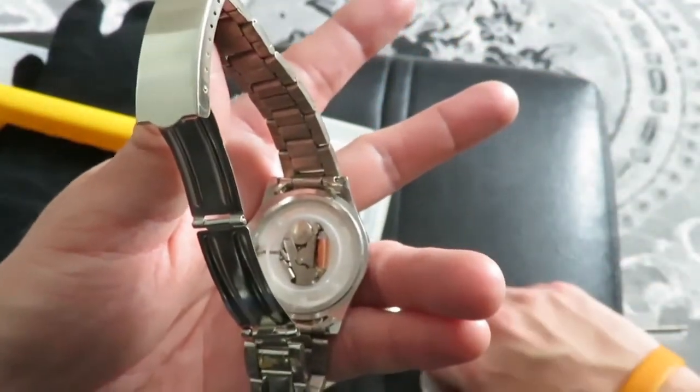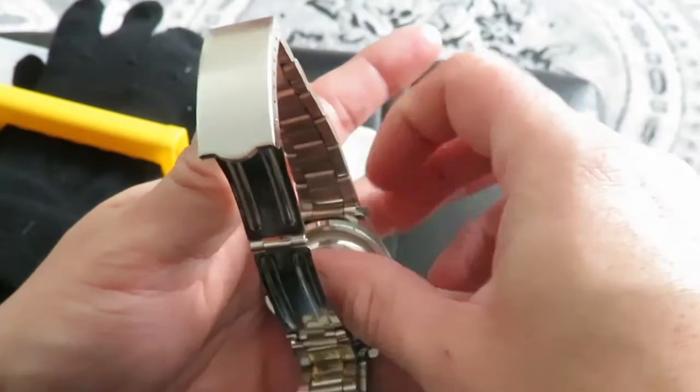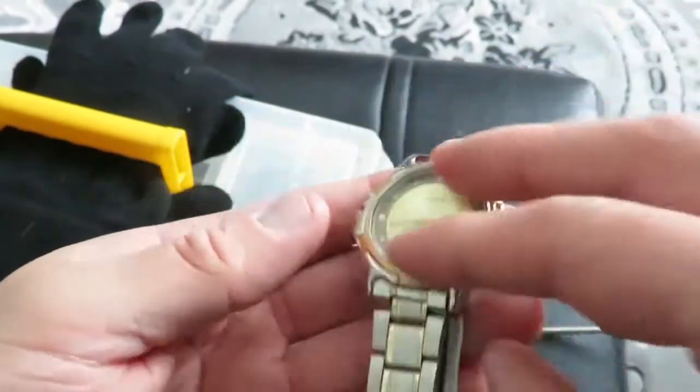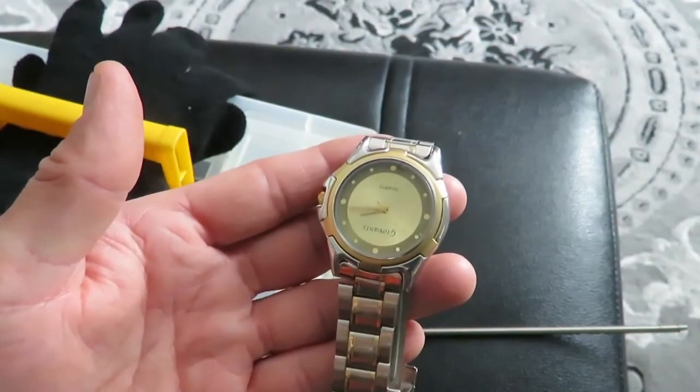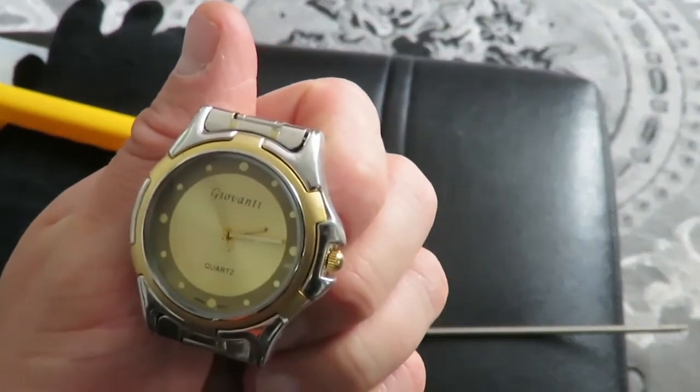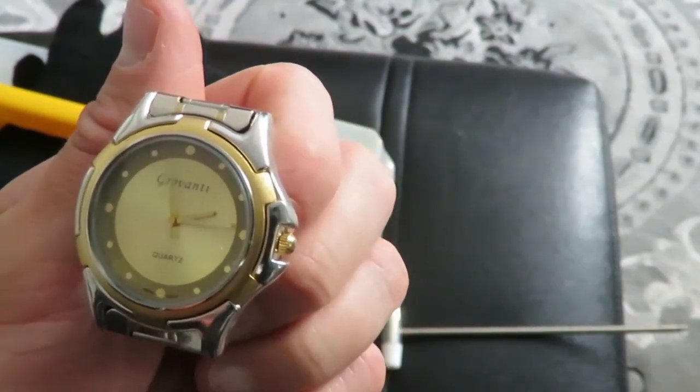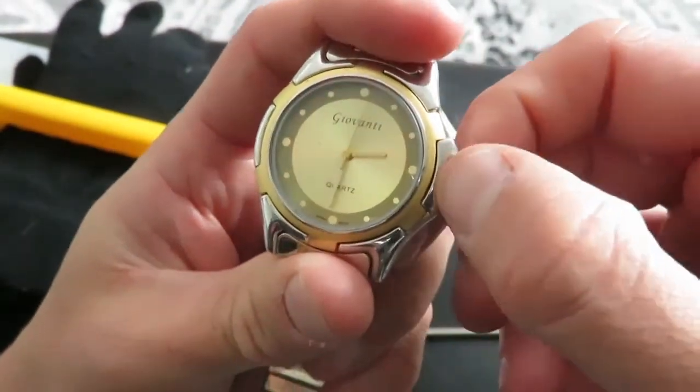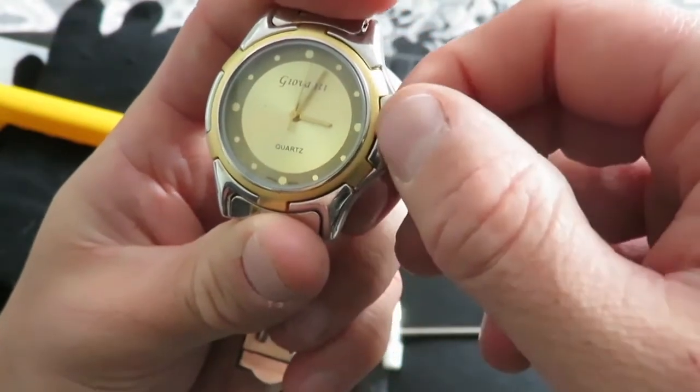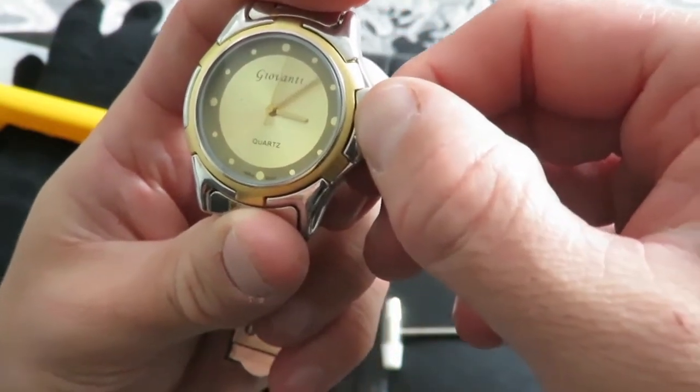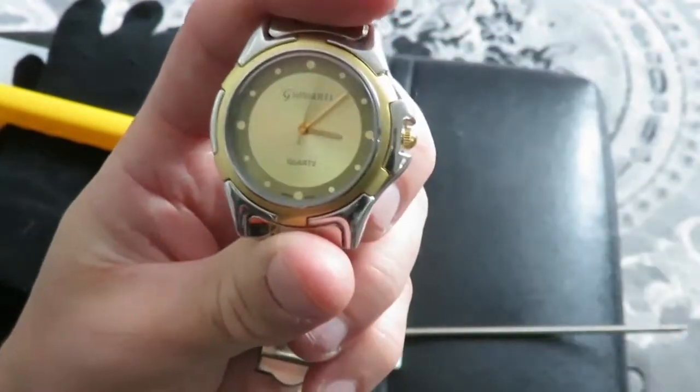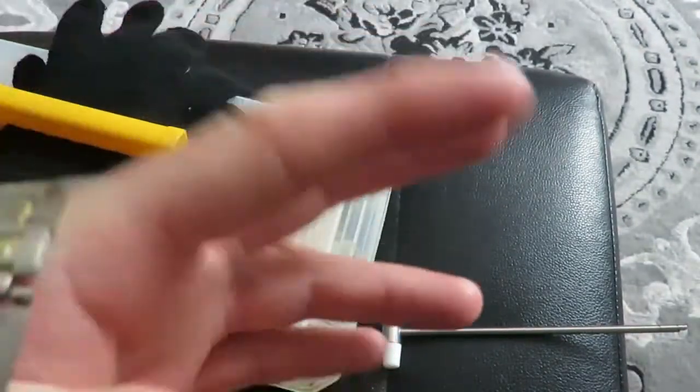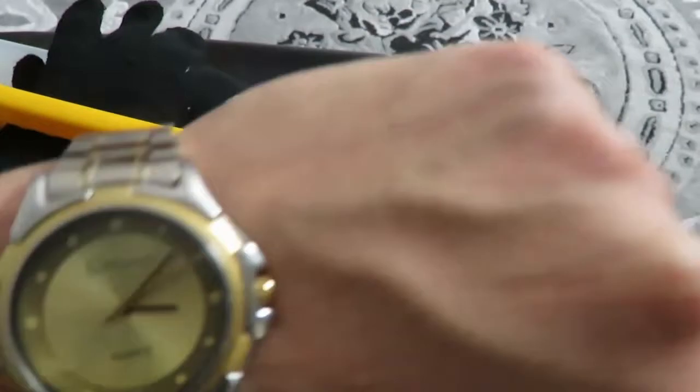Clip your backing on and there you go, your battery is all replaced. As you can see now the watch works, so you just set your time. Let's set our time here. Right there, and that's really how you do it. Very easy, nothing to it.